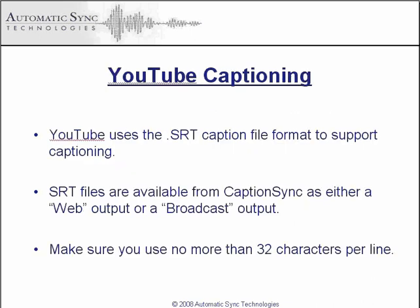Back to YouTube captioning. The first and simplest option is to use the native captioning support in YouTube. When you upload your video to YouTube, you can provide a caption file with your video. YouTube accepts the SRT format caption files, so you just need to select this output format when you make your submission to AST. SRT files are available as either broadcast output or web output.